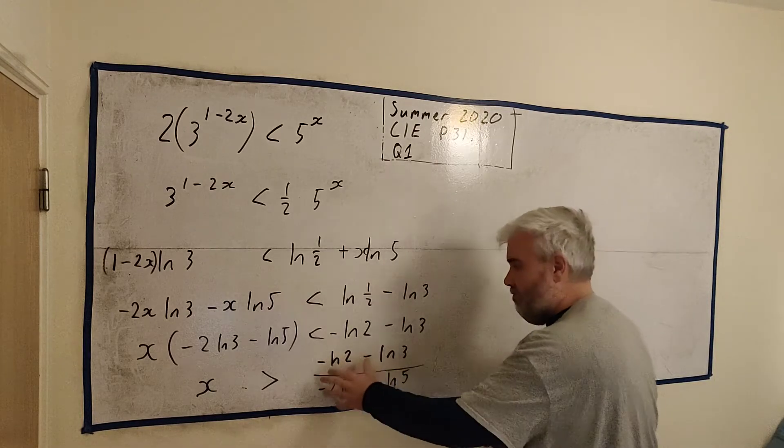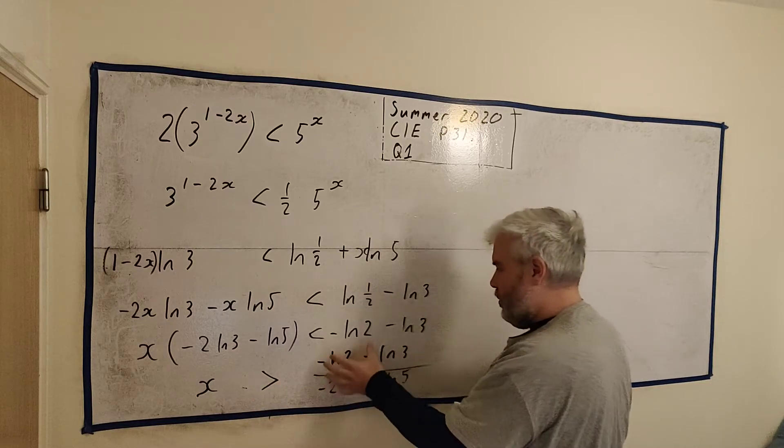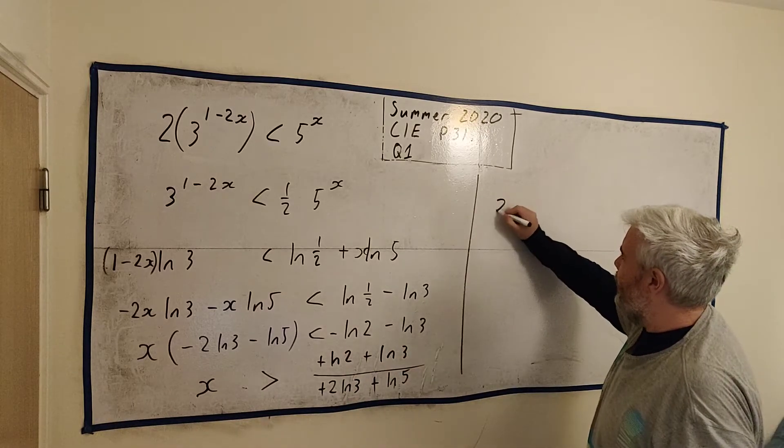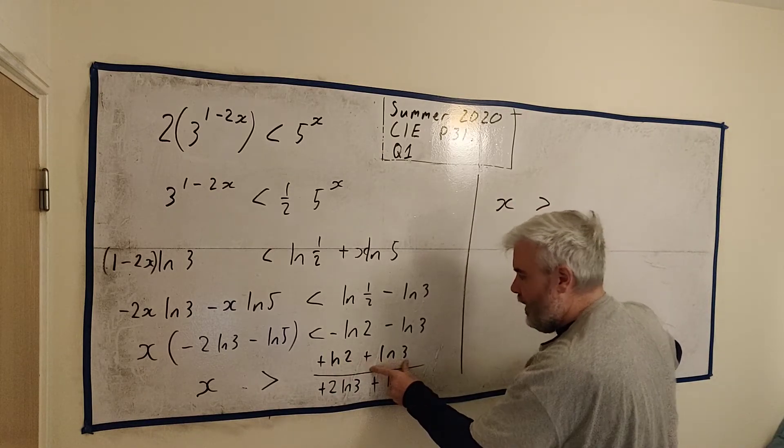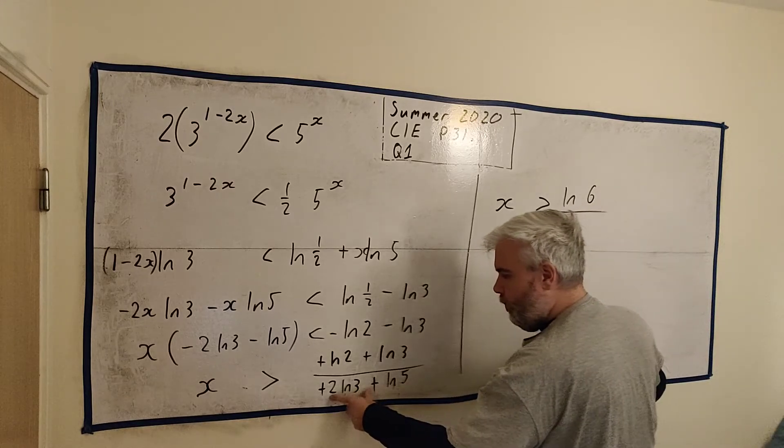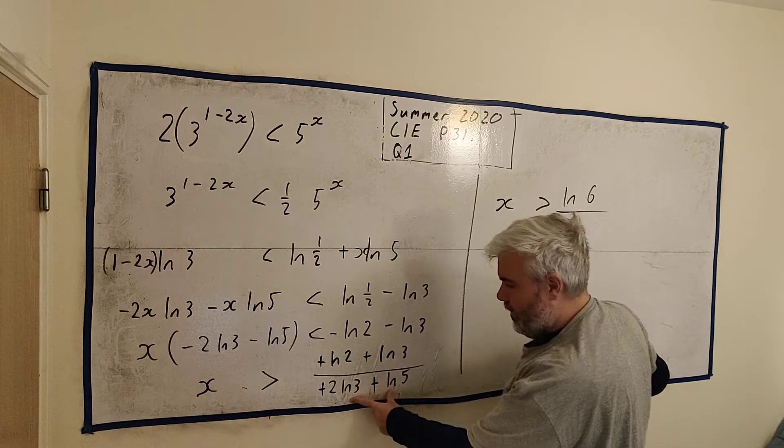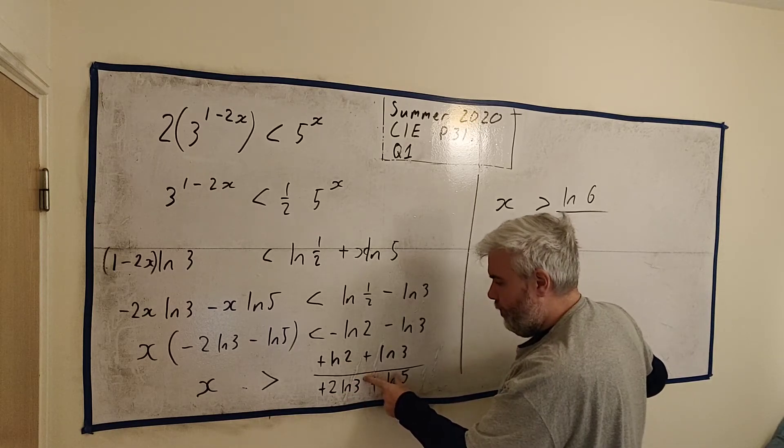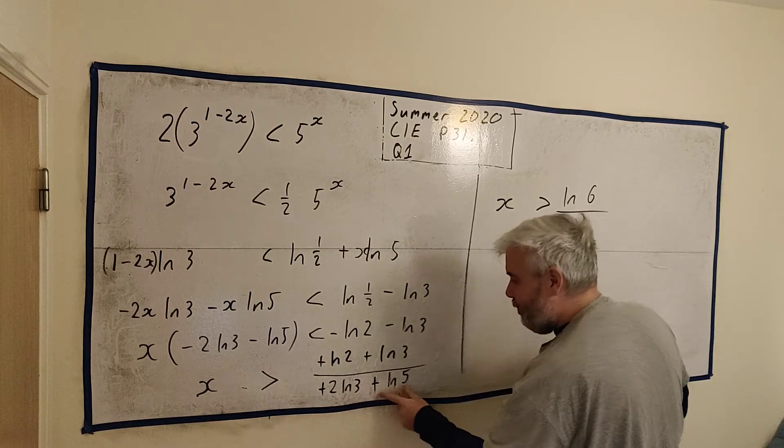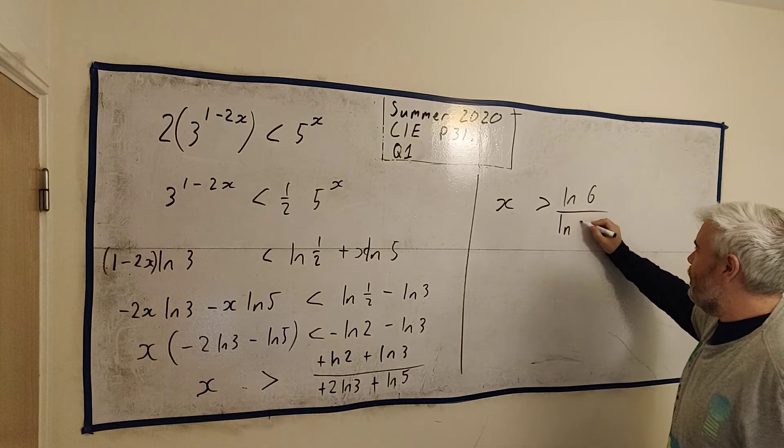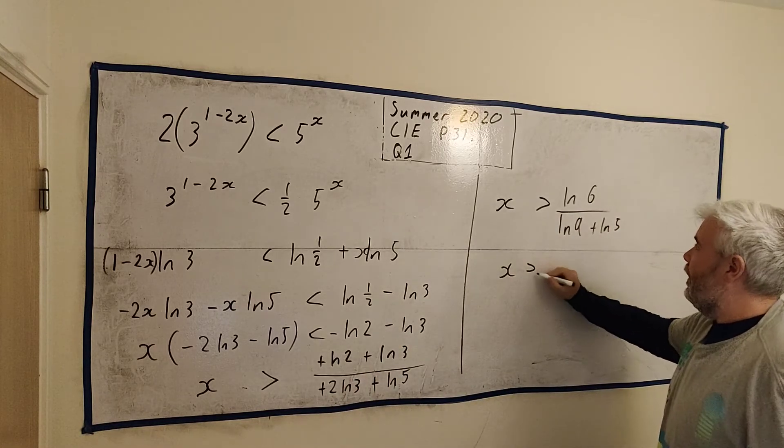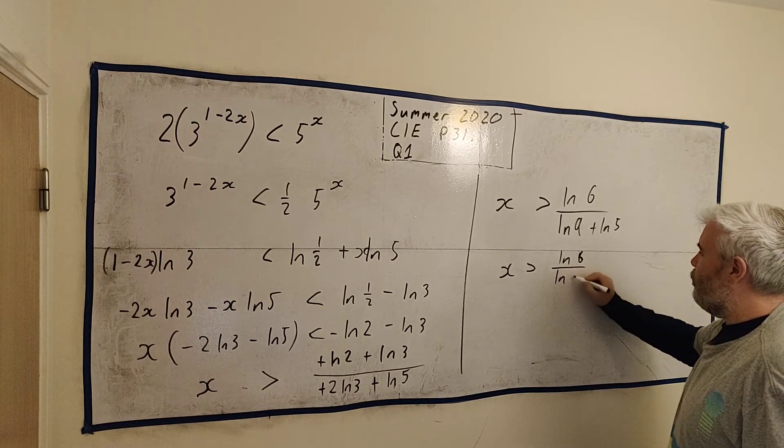Over minus 2 natural log 3 minus natural log 5. Now, all these minuses can cancel because we're not going to involve the equality here. We're just going to top and bottom, multiply and divide by a minus. So we'll get all of these to be a plus. So let's see what we can do now. We have x is greater than... natural log 2 plus natural log 3 is the same as natural log 2 times 3. That is 6. Natural log 2 times natural log 3. That's the same as natural log 3 to the power of 2, which is 9. Natural log of 9 plus natural log of 5. And the very last line, the simplest I can get it, is natural log 6 over natural log 45.